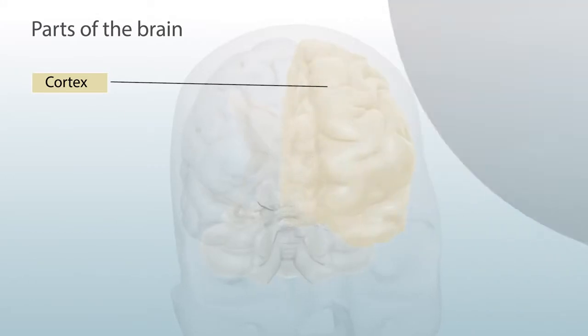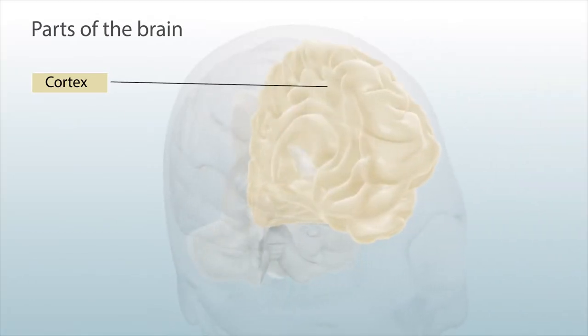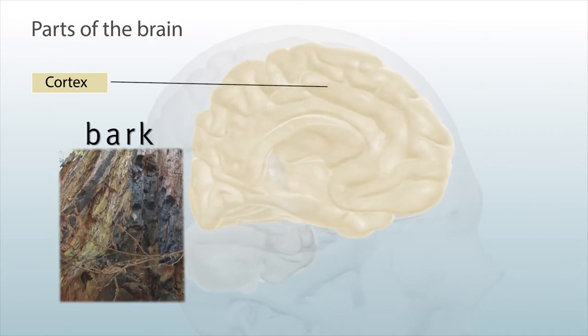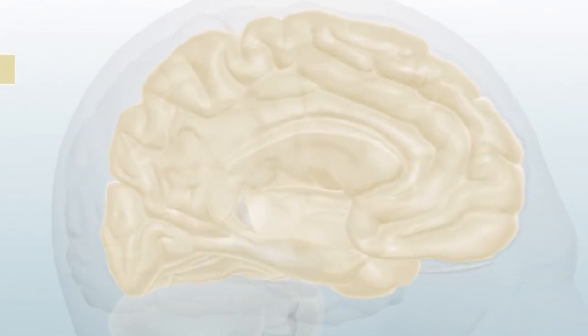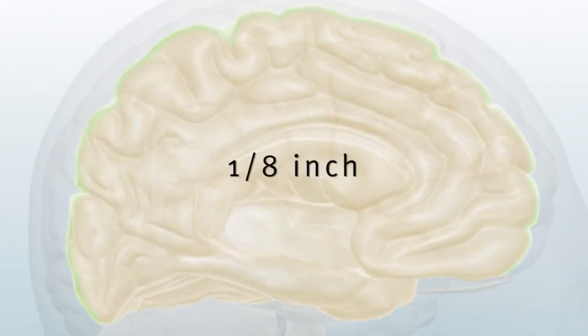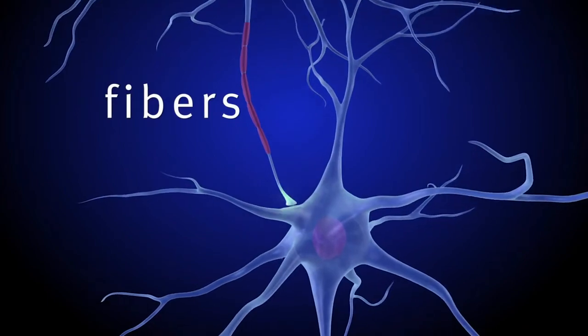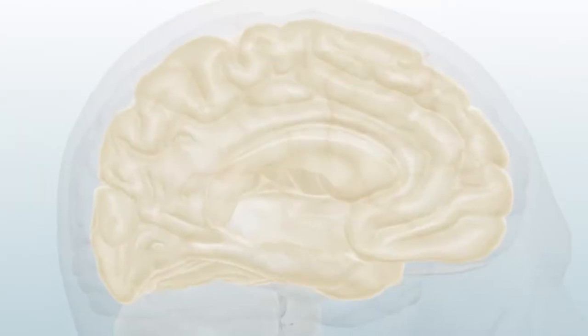The outer layer is known as the cortex, which is Latin for bark. Like a tree's bark, the surface is only one-eighth inch thick, but it also contains millions of cells with fibers that send messages to other brain areas.